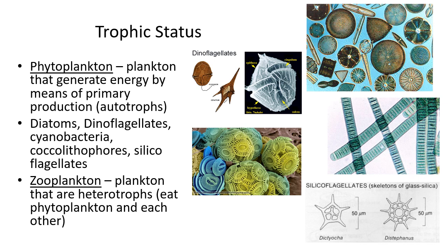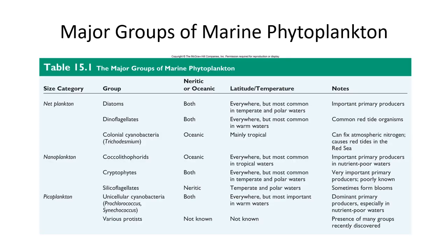Zooplankton are plankton that eat phytoplankton, or they might also eat other zooplankton. They're slightly larger and are the next trophic level up. This figure from your book shows the major groups of marine plankton, organized as net plankton, nanoplankton, and picoplankton. Generally, the smaller they are, the more important they are in photosynthesis and in creating the bottom trophic level for other organisms to feed off.